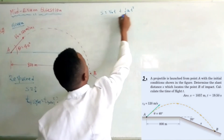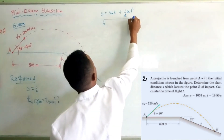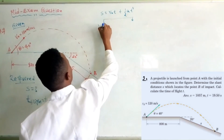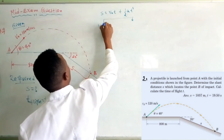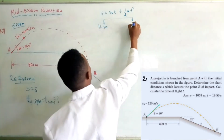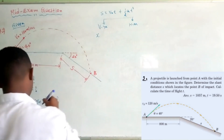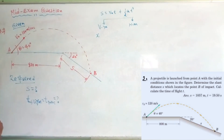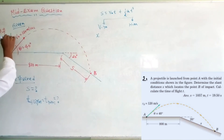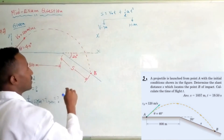The equation is: s equals u (initial velocity) times t, plus one-half a times t squared. In the case of vertical motion and horizontal motion, we take the reference axis at the launch point, with the y-axis vertical and the x-axis horizontal.